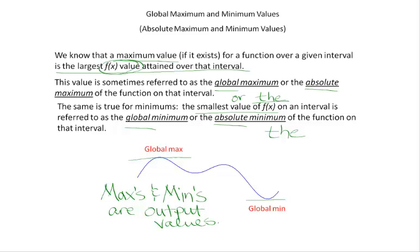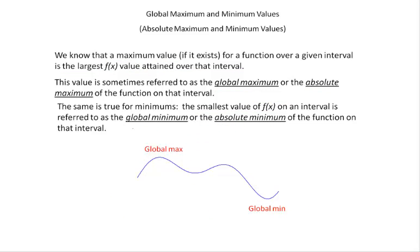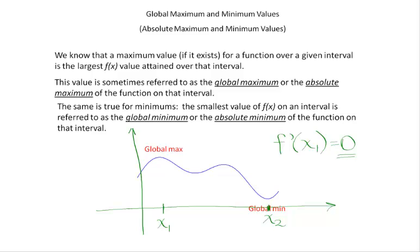So how can the derivative help us find these extreme values? What's happening on our function where a max or a min might occur? In this particular case, can you see that what's happening is where your derivative equals zero? We can identify the input values — I'm going to put this function in the plane — we can identify the input values where these max's and min's are going to occur, because if we put those values into our derivative function, we're going to see that the slope of the tangent line is zero.